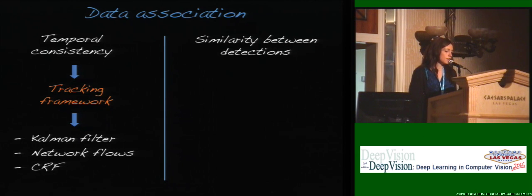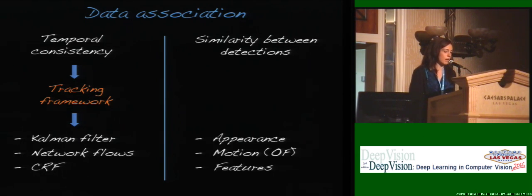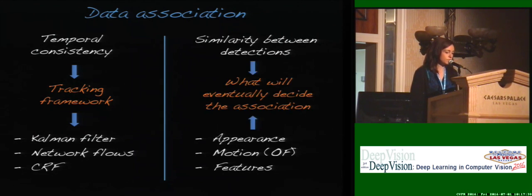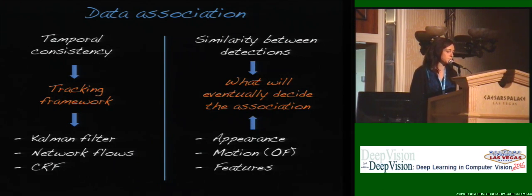On the other hand, the literature has also dedicated a lot of effort to improving the similarity between detections through better appearance models, motion models, or other features in order to improve the matching between detections. This similarity is what will eventually decide which detections go together into trajectories.